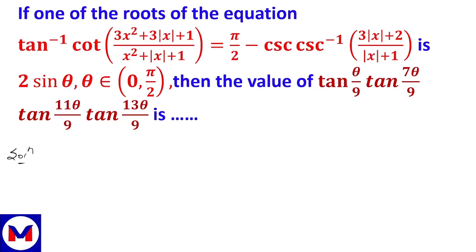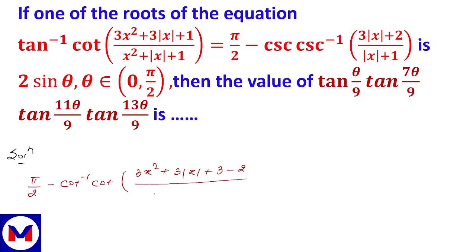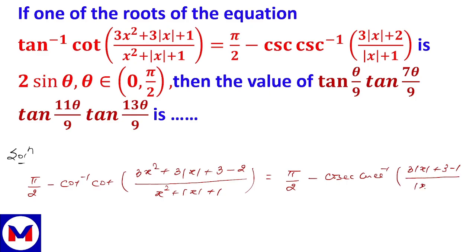So first, let us simplify the problem. We express the equation in terms of x and see what kind of equation we get. Using the identity π/2 − cot⁻¹(x) = tan⁻¹(x), we rewrite: cot⁻¹(cot((3x² + 3|x| + 1) / (x² + |x| + 1))) on the left side equals π/2 − cosec⁻¹((3|x| + 2) / (|x| + 1)).